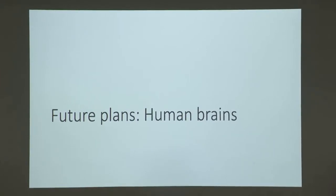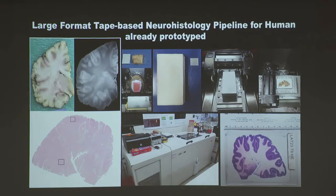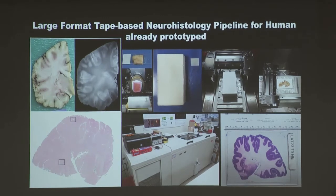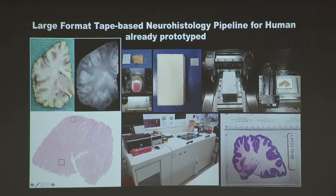We have just received word that we may be funded for a human brain project. I have always wanted to study humans — mice are interesting, but we want to study humans. The tape transfer method works for a small piece of human tissue cut on the same cryostat we use for mice, and also for a cross-section of a human brain hemisphere cut in a large whole-body cryostat. We can use the same method and produce high-quality human brain sections.